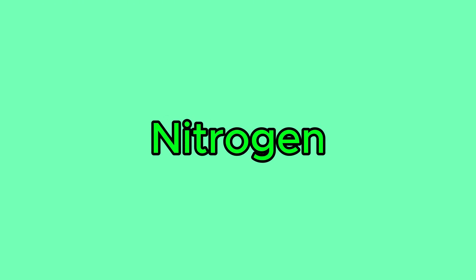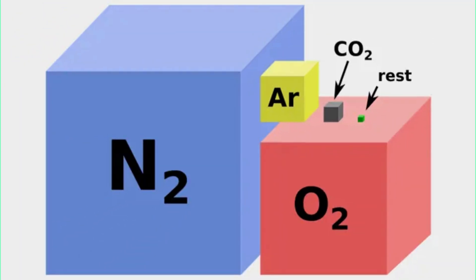Nitrogen is the seventh element on the periodic table and, believe it or not, by far the most common element in our atmosphere, making up over 70% of the stuff we breathe.